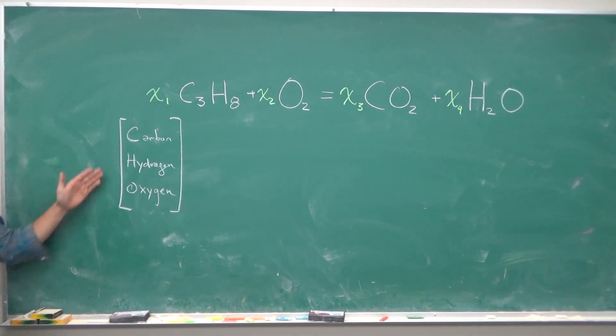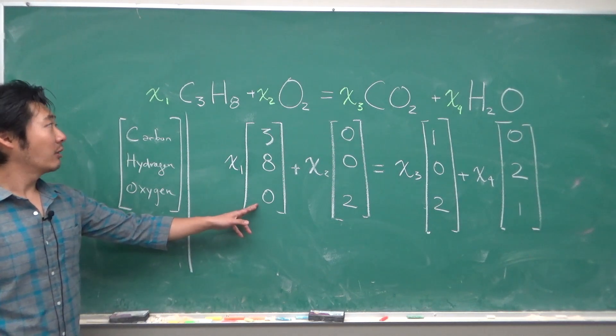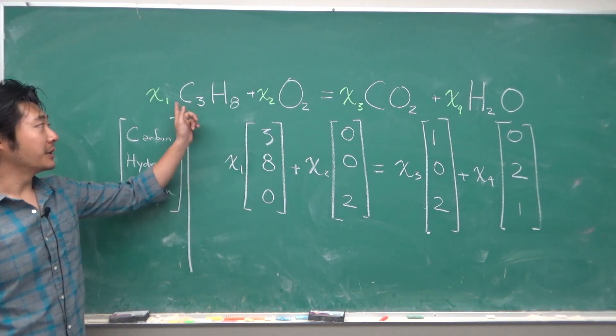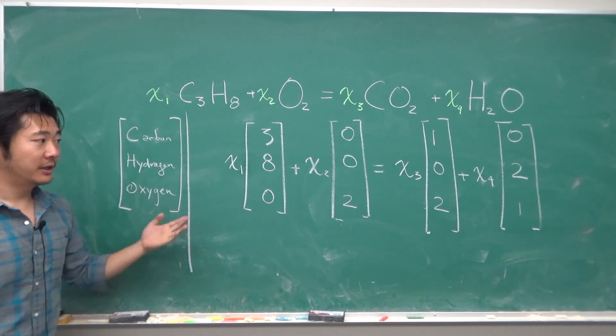Let's represent our vector as how many parts carbon, hydrogen, and oxygens there are in each of the chemicals. Then we have this vector equation. This vector represents propane, because it has 3 carbon and 8 hydrogen and 0 oxygen, etc.